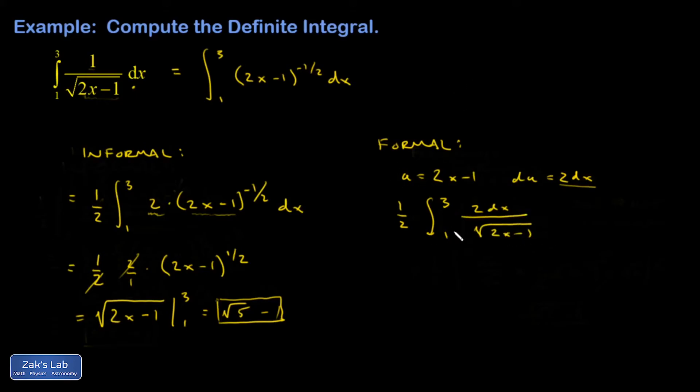And I'm going to take the opportunity here to transform my limits. So, when I write this as a u integral, this is du over root u. I can't write that u goes from 1 to 3. That was x going from 1 to 3. So, let's transform the limits up here and say x equals 1 implies that u is equal to 2 times 1 minus 1.